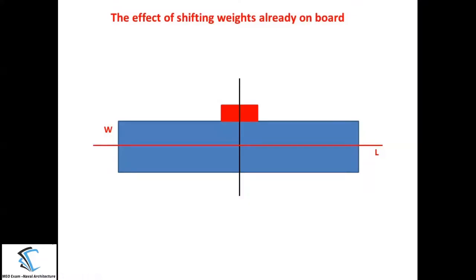Before starting the numerical let me give one animation. Through the animation you will come to know exactly what I am trying to explain in the upcoming class. Now there is one cargo already on board. I have taken here a box-shaped vessel, so the centre of flotation is at the intersection of the water line and the midship. Initially I am considering that the cargo is kept on the centre of flotation.